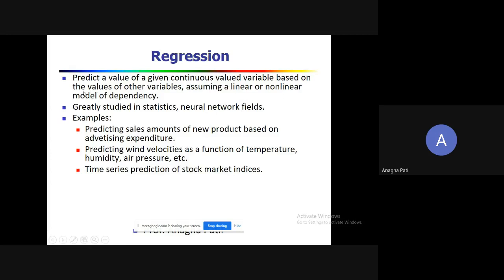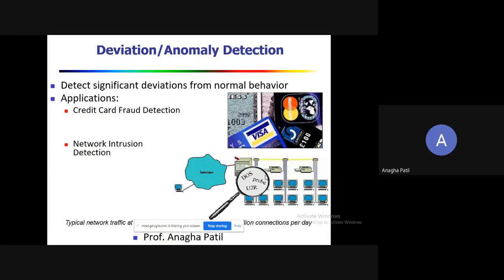Regression assumes a linear or non-linear model of dependency. Applications include predicting sales amount based on advertising expenditure, predicting wind velocities as a function of temperature, humidity, and air pressure, and time series prediction of stock market indices. The final data mining task is deviation or anomaly detection, which identifies significant deviations from normal behavior — used for credit card fraud detection and network intrusion detection.